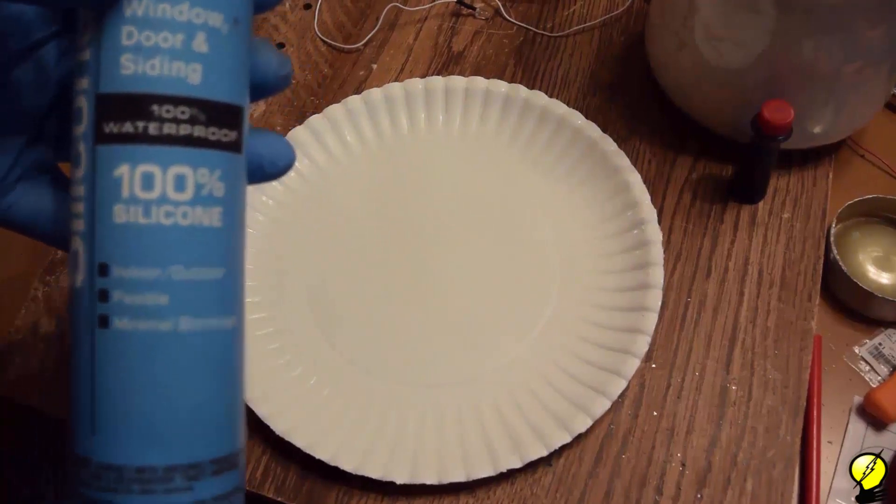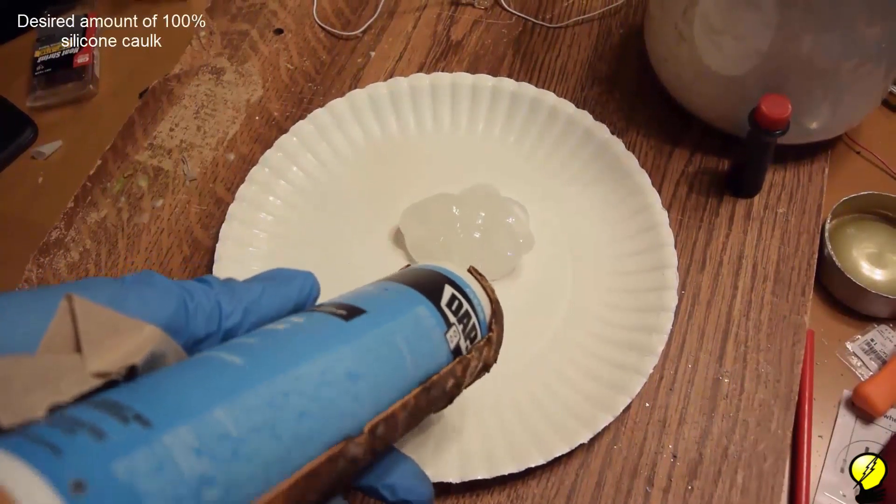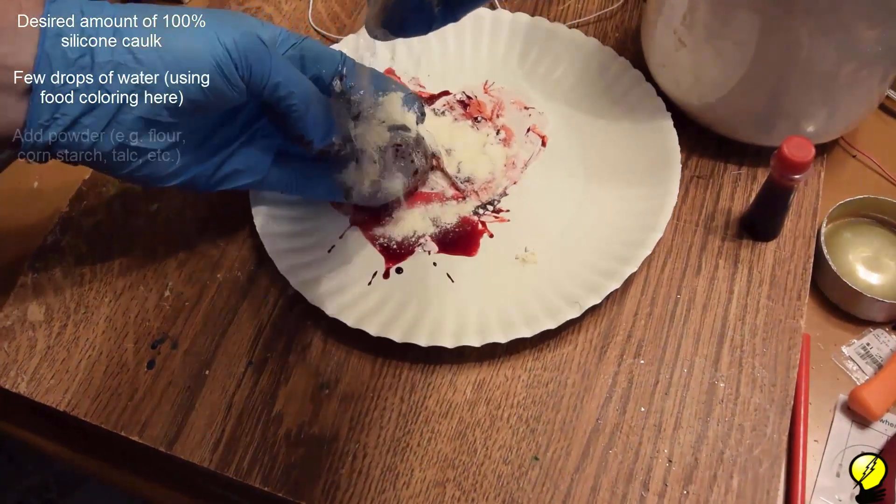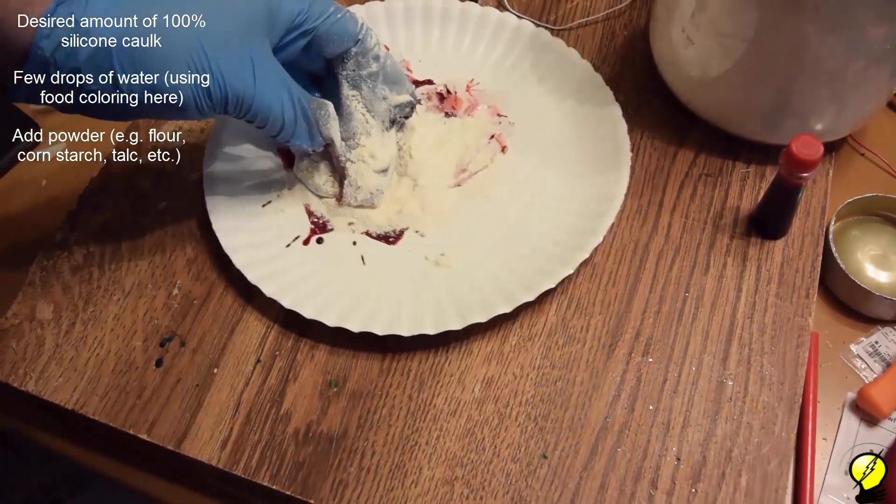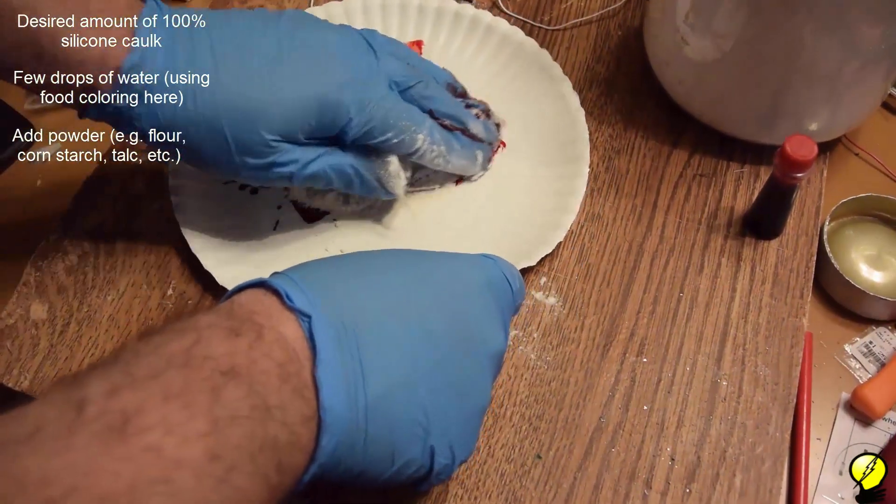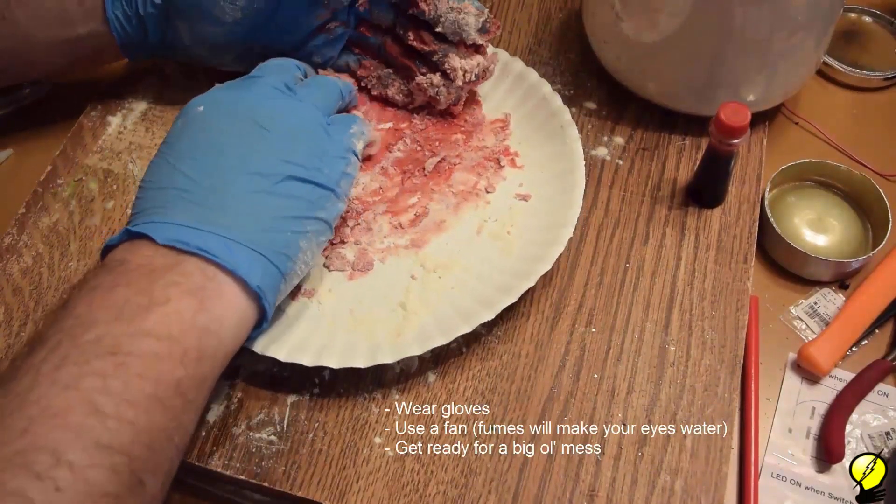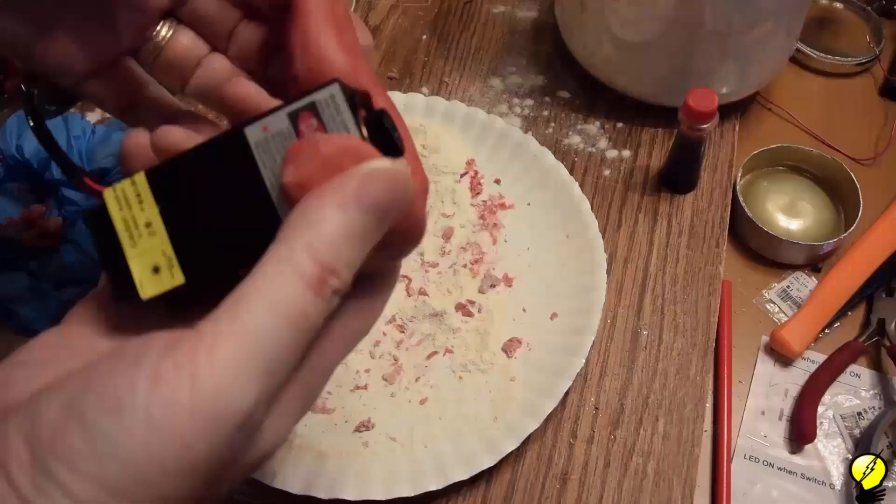Next we'll mix up some rubber to hold the laser in place in the barrel. I saw this recipe on the King of Random. The link is in the description below. The directions are as follows. Dispense the desired amount of 100% silicone. Note that not all caulk will work. It needs to be 100% silicone. Next add some water. Here I'm adding food coloring. And add some powder. Be sure to wear gloves and be in a well ventilated area.